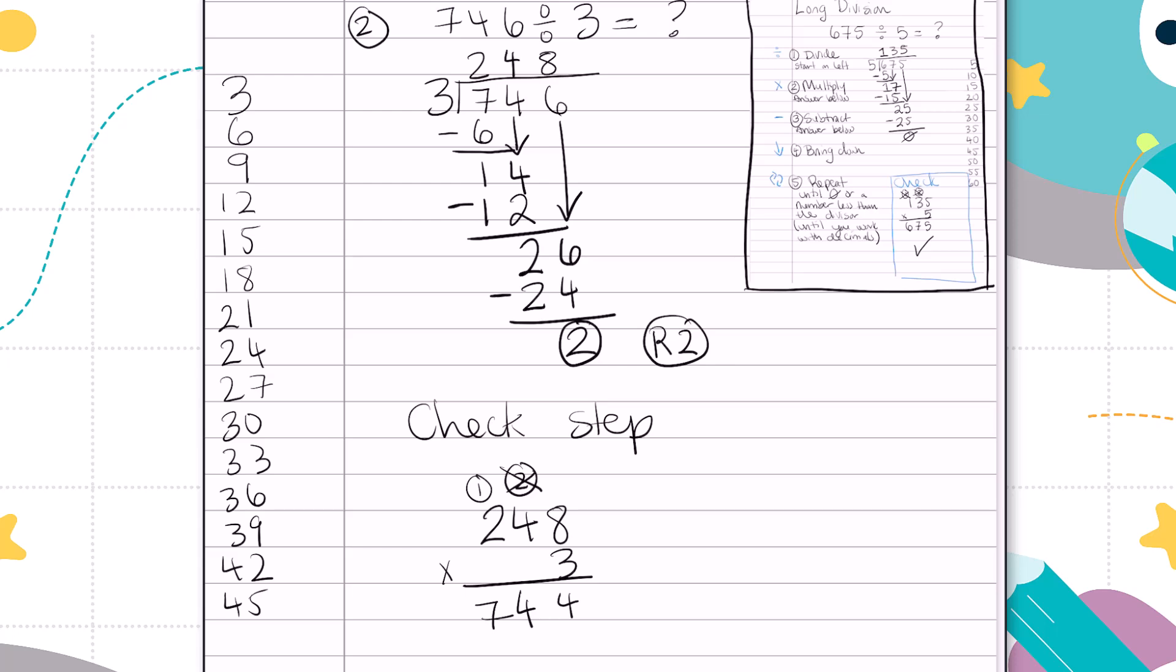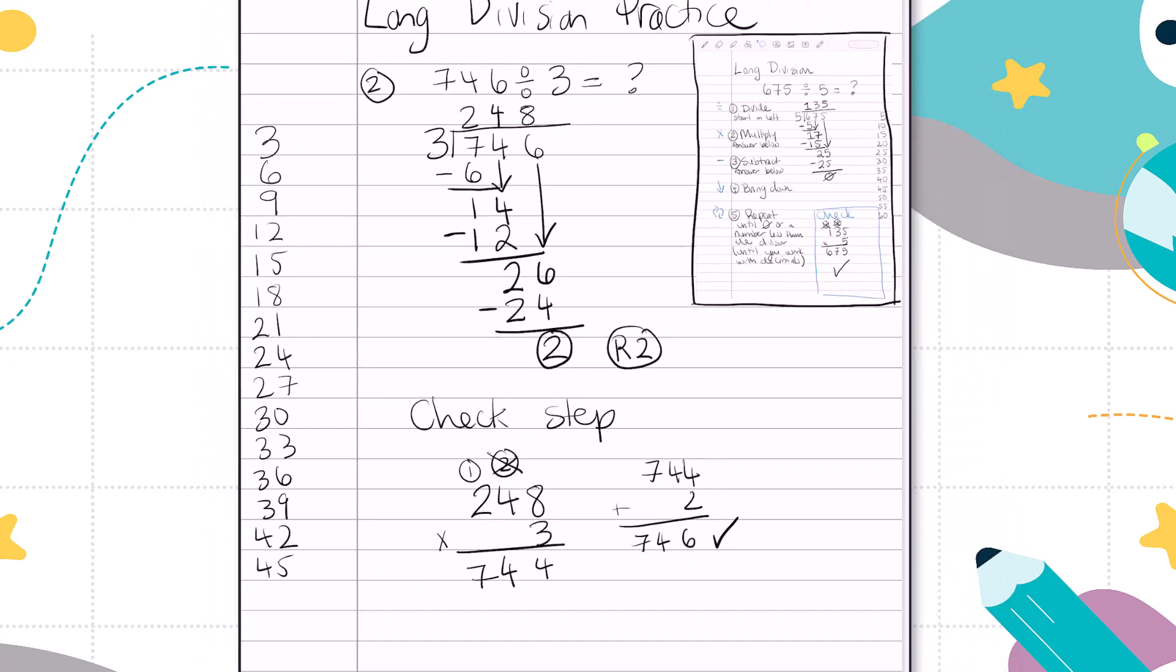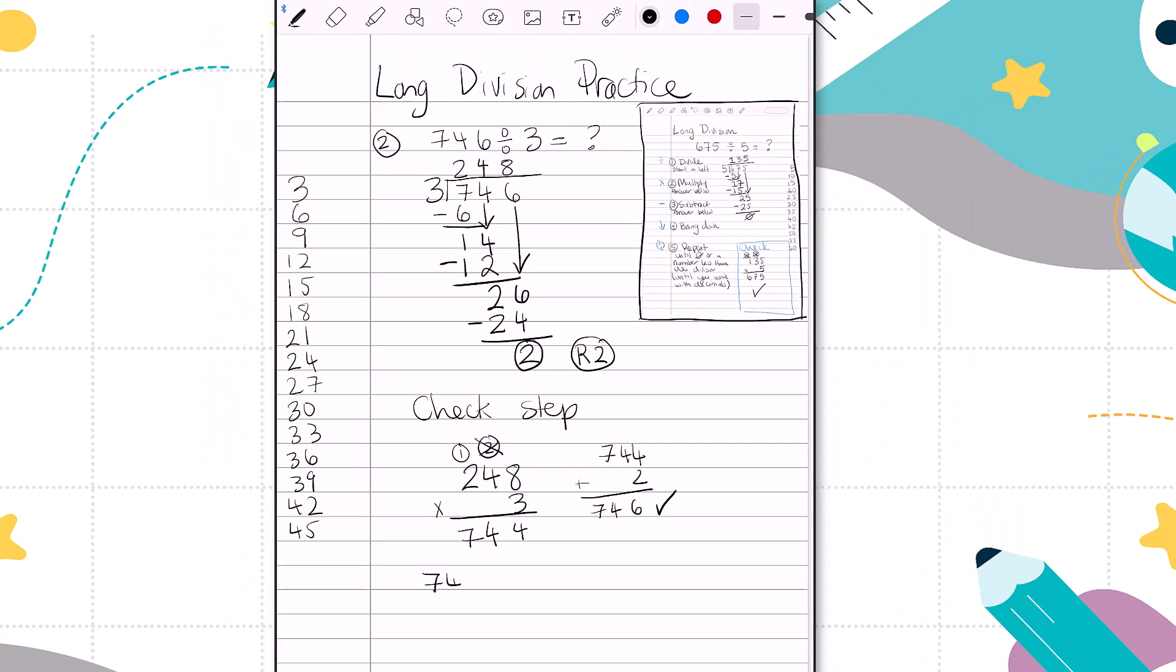Hmm, something is not quite right. Ah, we haven't forgotten about our remainder. We had a remainder of 2. And so if I take our answer, 744, and I add the remainder, or what's left over, that does give us 746, which means our answer checks out. 746 divided by 3 equals 248 remainder 2.